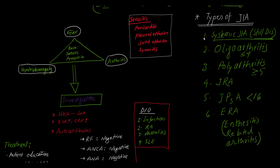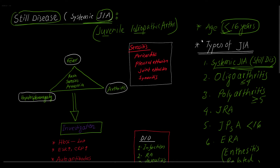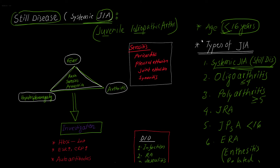Today I am going to talk about Systemic JIA, that is Still's disease. The features of Still's disease can be remembered as a triad. Number one, fever — the fever is spiky, meaning it goes up and down in a spike pattern. Number two, hepatosplenomegaly, the most important finding on examination. Number three, arthritis.